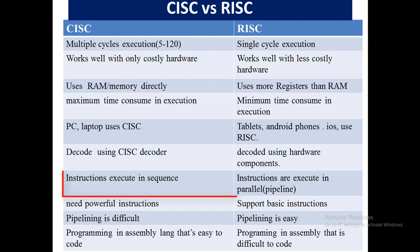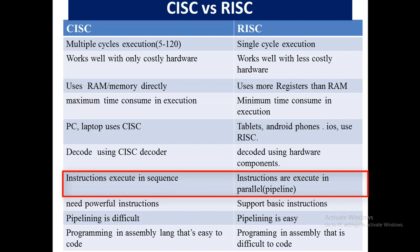Regarding instruction execution order: in CISC, all the instructions execute one by one, one after the other sequentially. While in RISC, instructions execute in parallel in a pipeline manner.